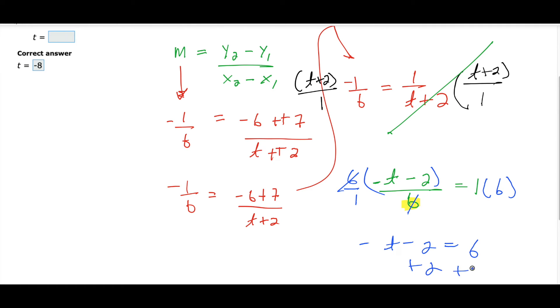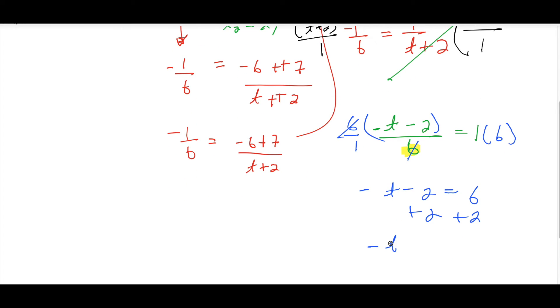Plus 2 plus 2. Which is 8. So you get -t equals 8, but then you can't have a negative variable, so you divide by -1. Right. And you get -8. Okay. The other way—It's -8.